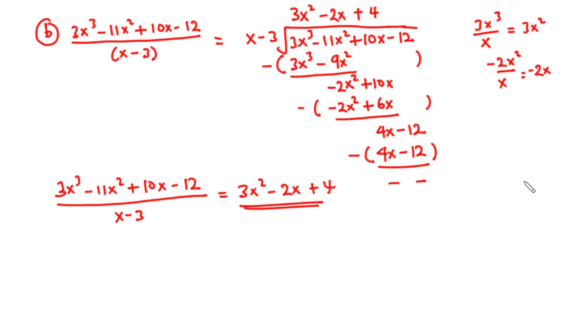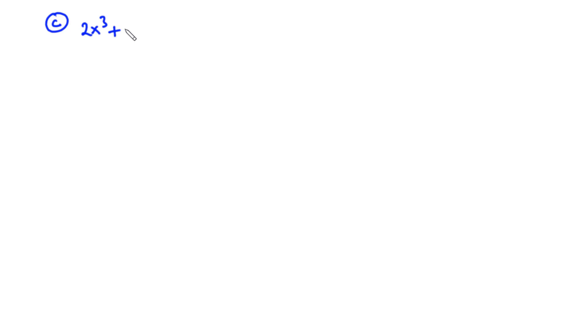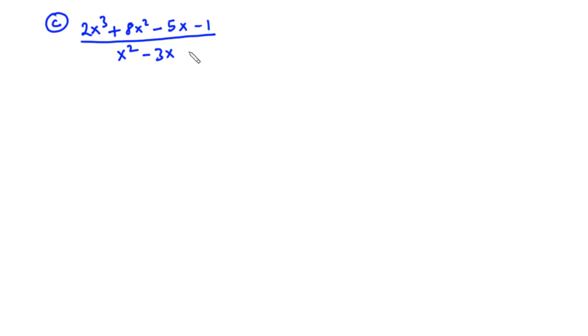Now let's solve the last question. For the first two questions, the remainder was 0. However, for question C, we are going to have a remainder not equal to 0. So for C, we have 2x cubed plus 8x squared minus 5x minus 1 divided by x squared minus 3x plus 1.